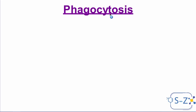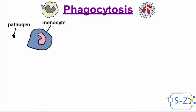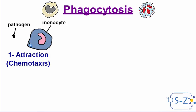Now, regarding phagocytosis during the inflammatory reaction — it is a process done by phagocytes such as monocytes and granulocytes. The process has several steps. First, when a pathogen enters the body, it automatically releases chemicals that attract the phagocyte. The phagocyte detects the pathogen through these chemicals. This step is called chemotaxis.